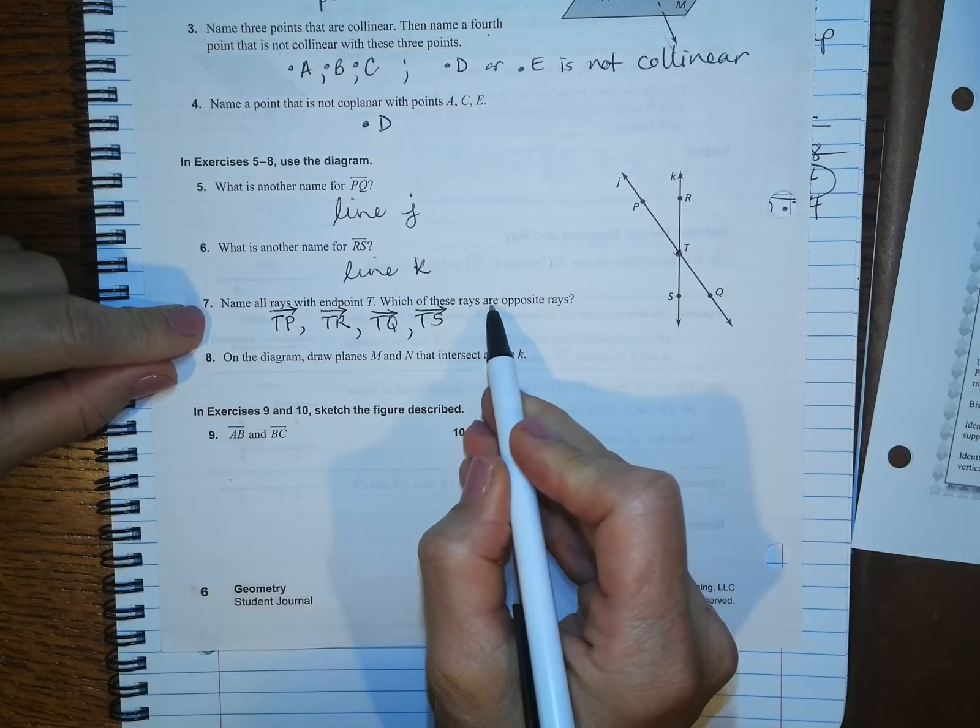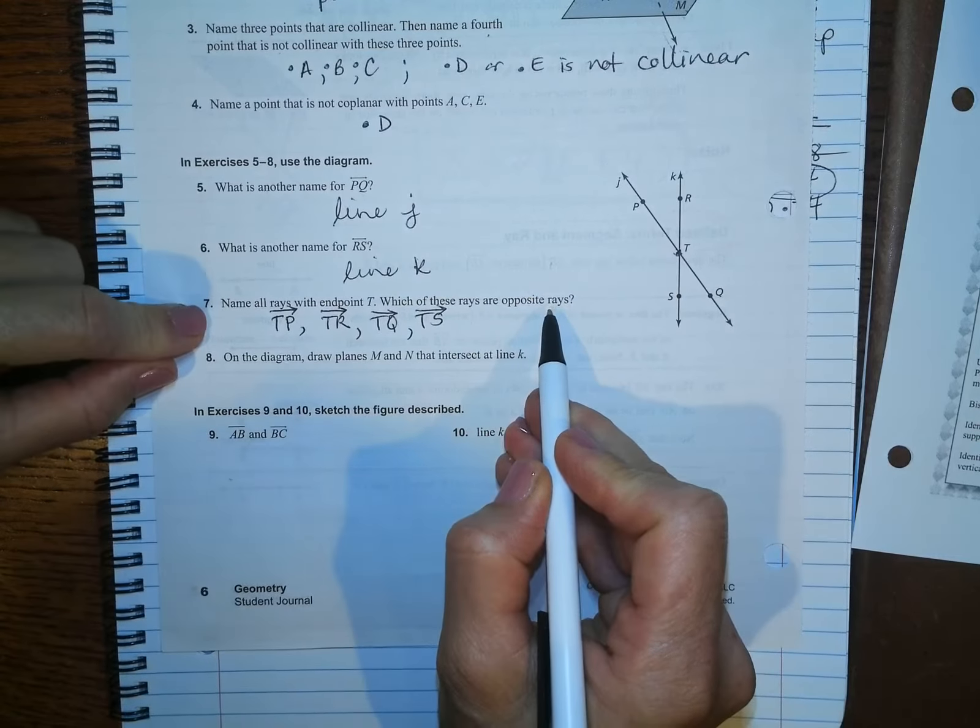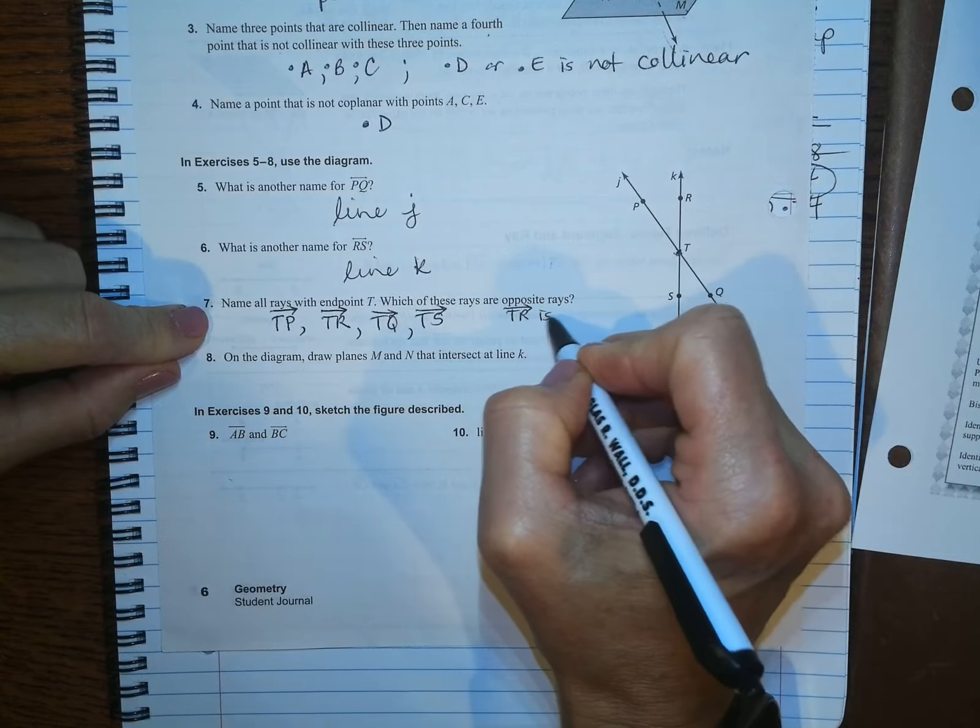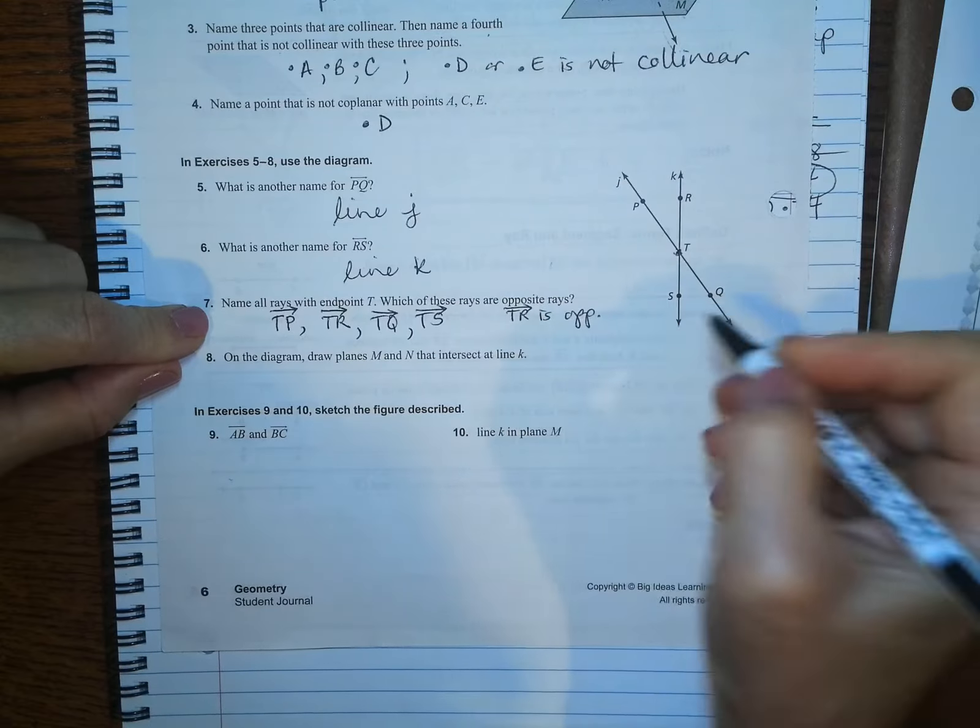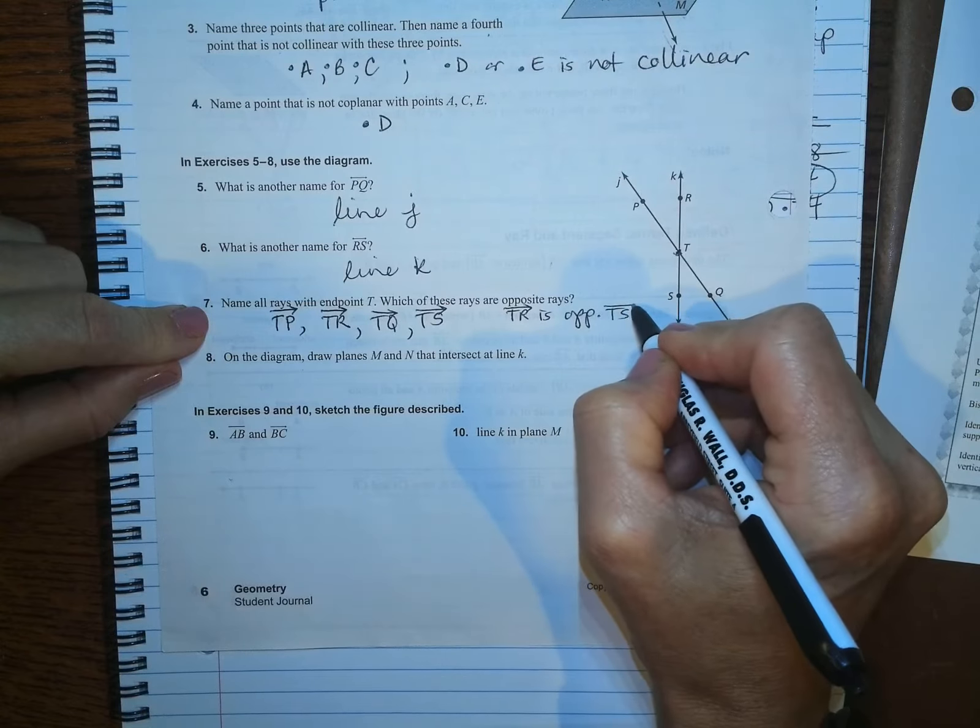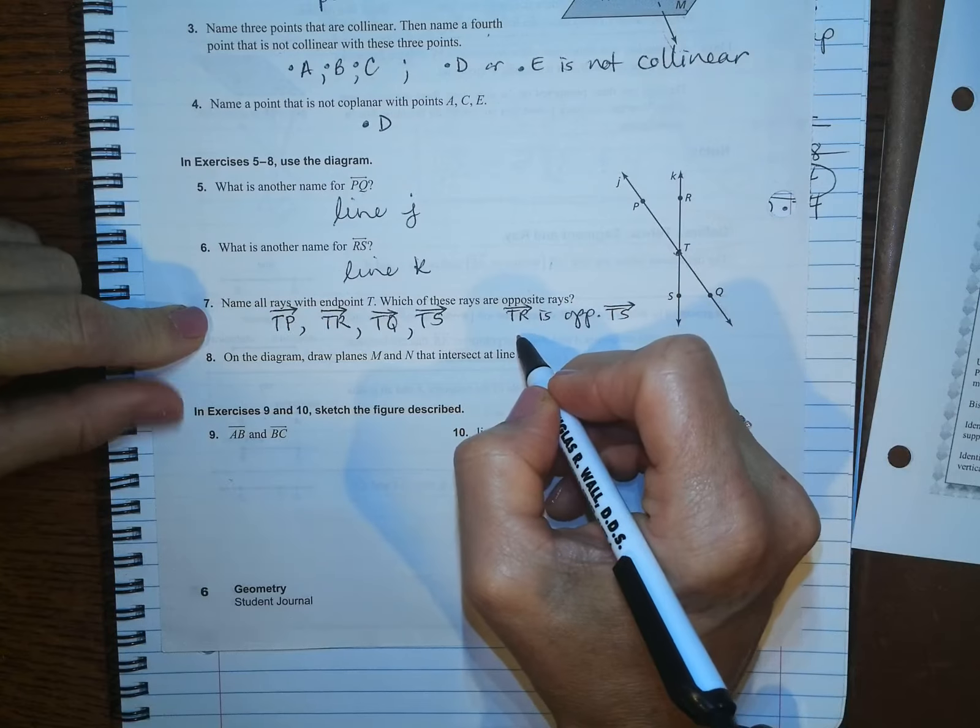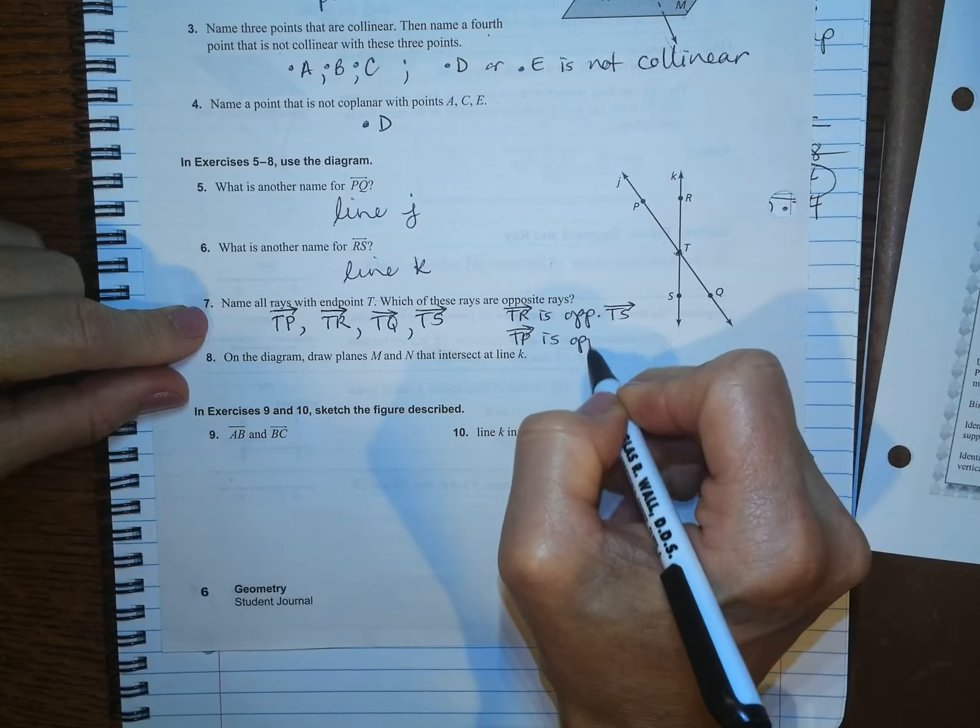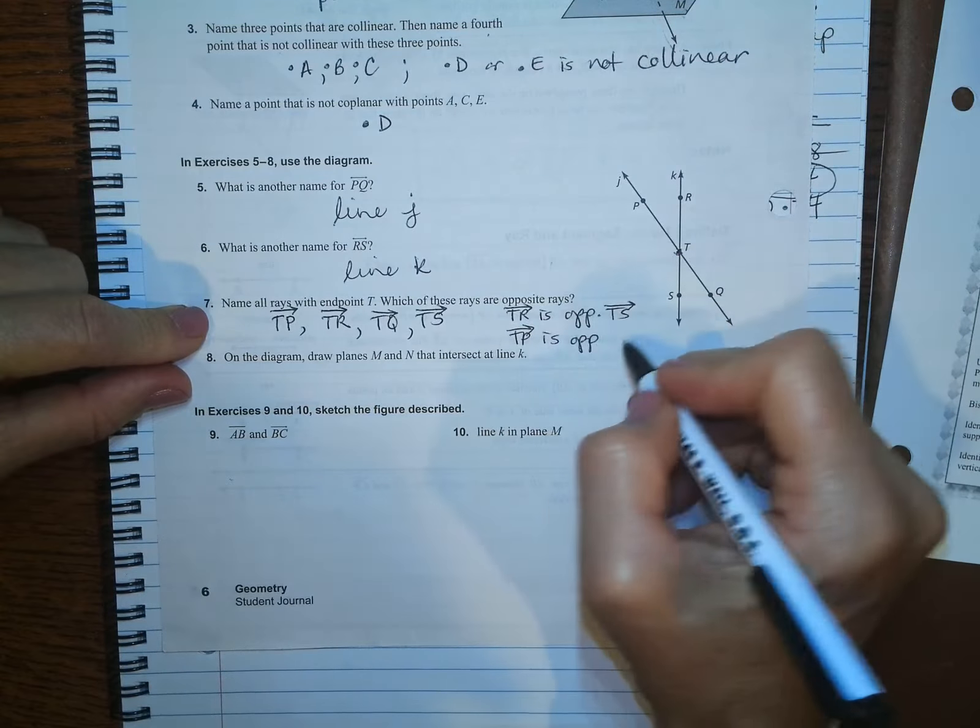Which of these rays are opposite rays? So, T, R is opposite T, S, and T, P is opposite T, Q.